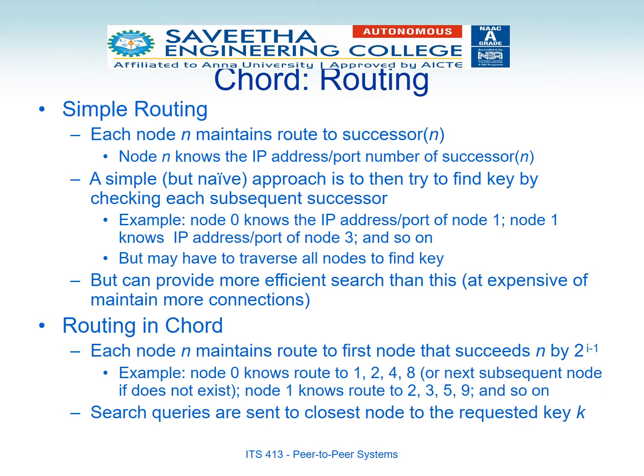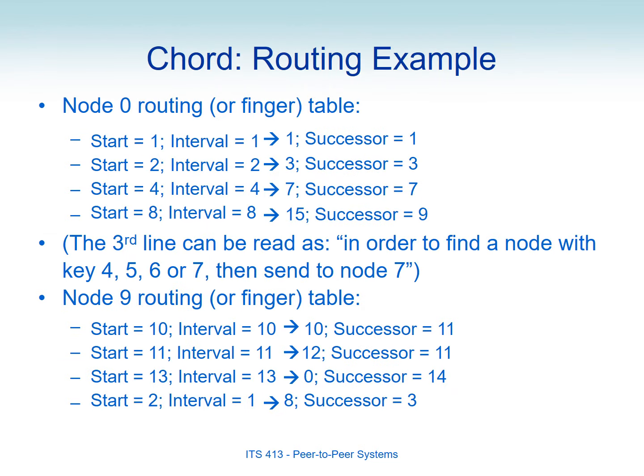So how does routing happen in Chord? We have to search from the starting node 0 — 0 to 1, 1 to 2, 2 to 3, and likewise it travels in a sequential manner. Each node maintains its routing table, which is called a finger table. Node 0's finger table is calculated as: 0 plus 2^0, 0 plus 2^1, 0 plus 2^2, 0 plus 2^3, giving values 1, 2, 4, and 8.